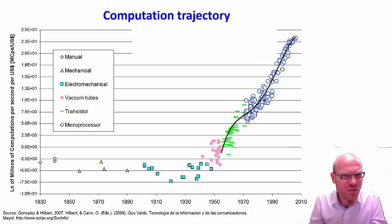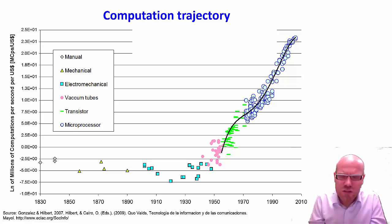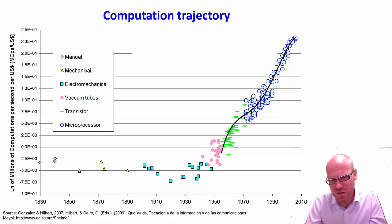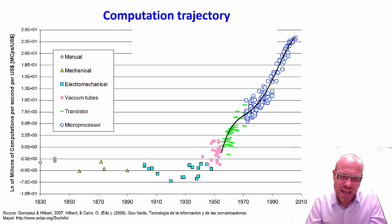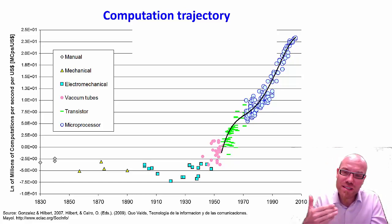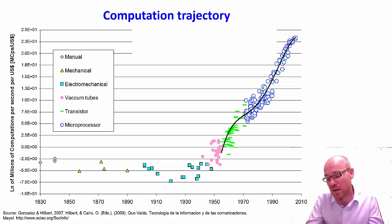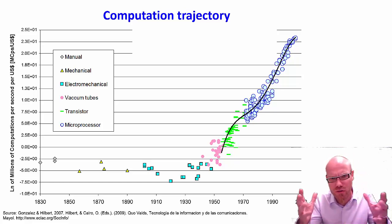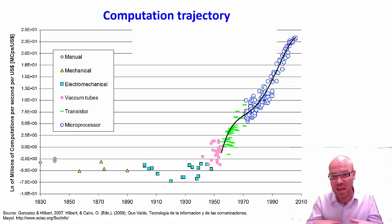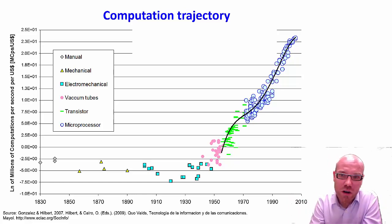Now, exponential progress is something quite counterintuitive to us. We usually think in linear progress, not exponential progress. What does exponential progress mean? It means that the growth trajectory is doubling in some interval — be it every two, three, four, five, or ten years. In this case it's about every two or three years. It's called Moore's Law.